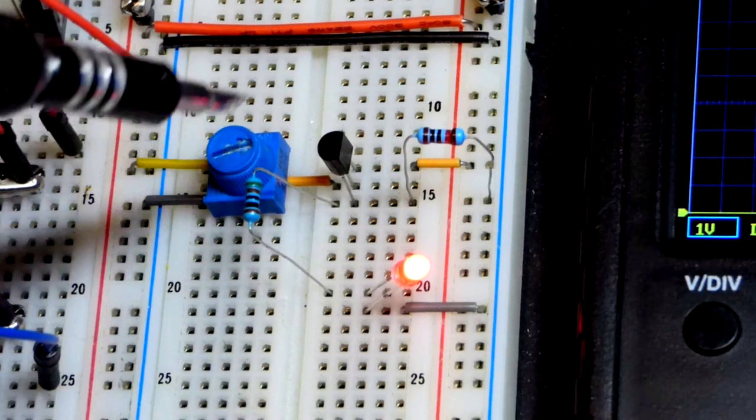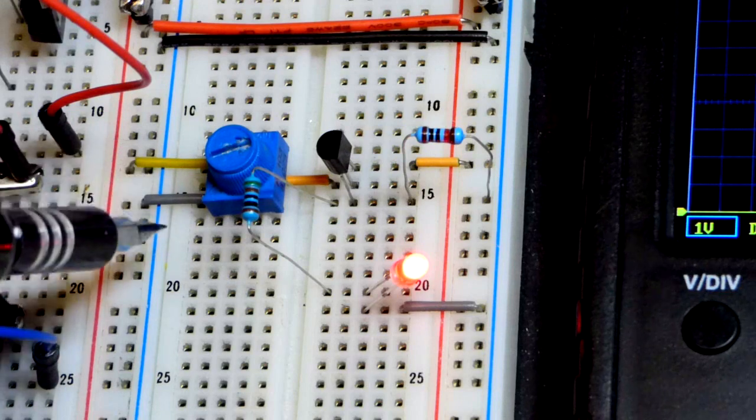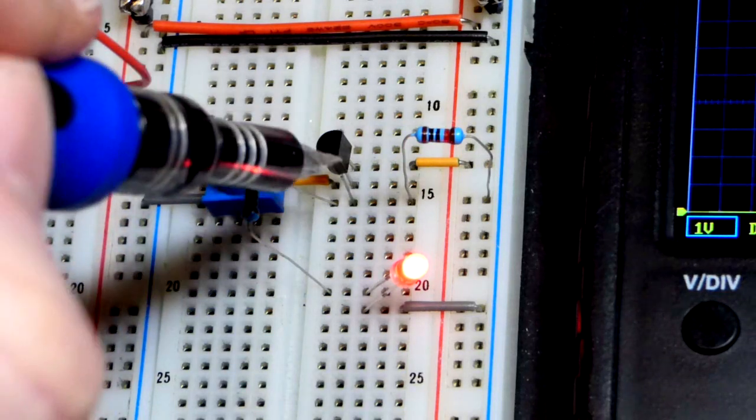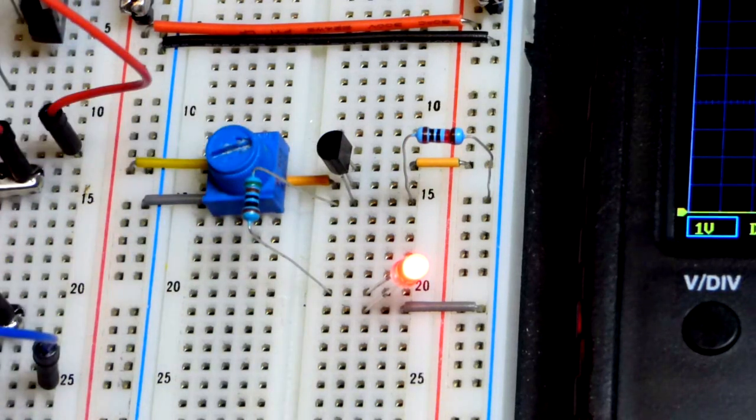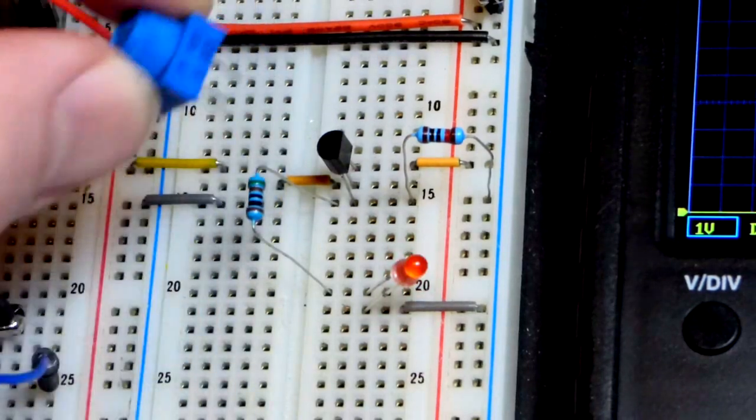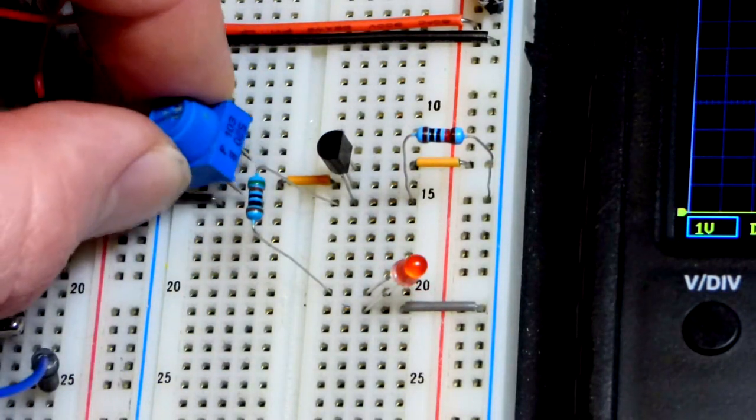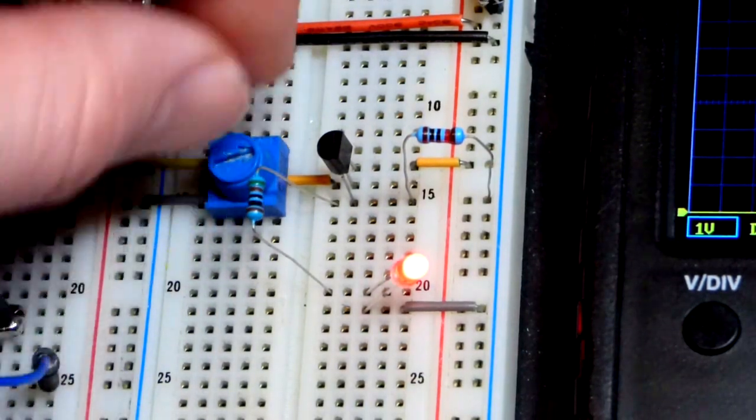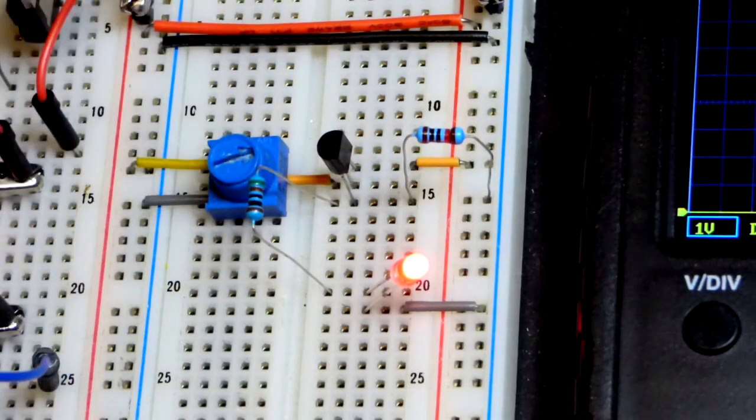So now, here we got the trim pot set where I want it to begin with. Positive supply, negative on the ends. And then the wipers in the middle. They're just pins on this trim pot. If you haven't seen it yet, just little metal pins right there. And now we set 0 volts at the base.